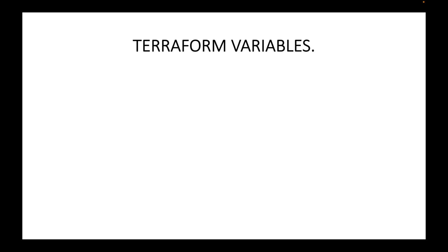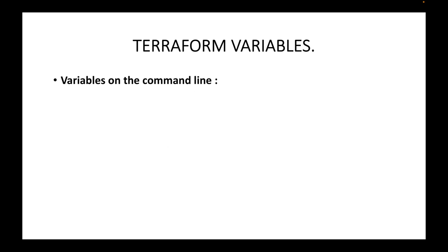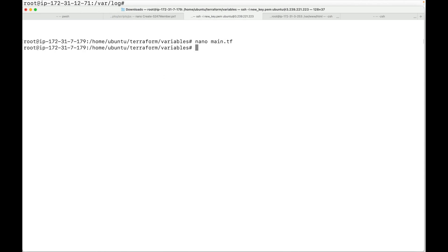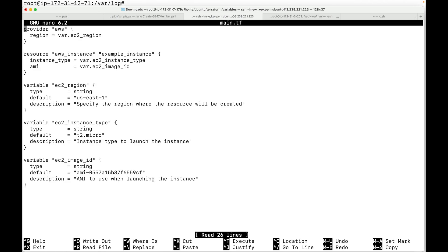In this session we are going to look at how you can pass values to your variables from the command line. In the last session we looked at how you can refer to variables within your configuration files, and we also looked at how you can make use of the default to pass a value to your variable. The default can be used as a last resort if you're not passing any values.